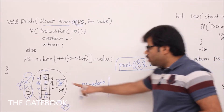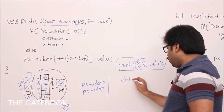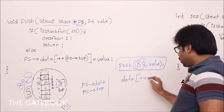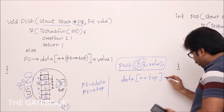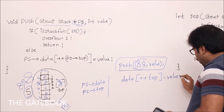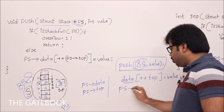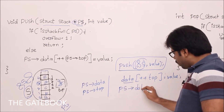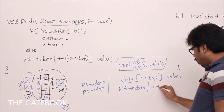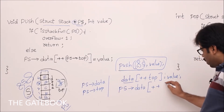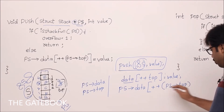What was the logic to push data? The logic was: data[++top] = value. Now let me convert it to real code. 'data' is nothing but PS->data. Then: PS->data[++PS->top] = value, replacing top with PS->top. Be careful with the parentheses around PS->top.